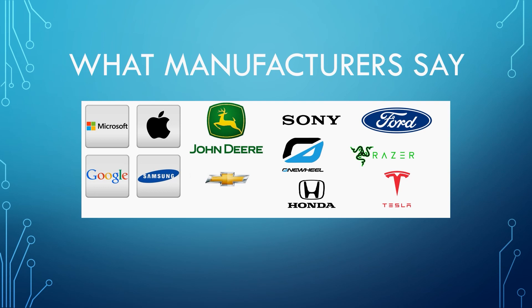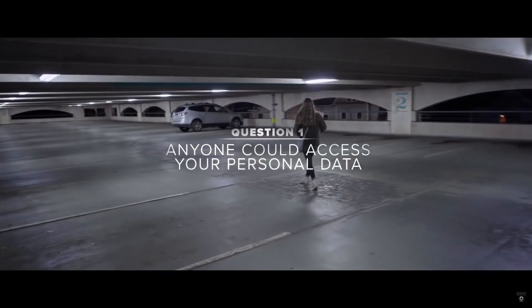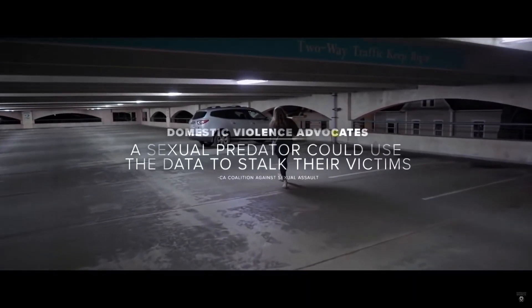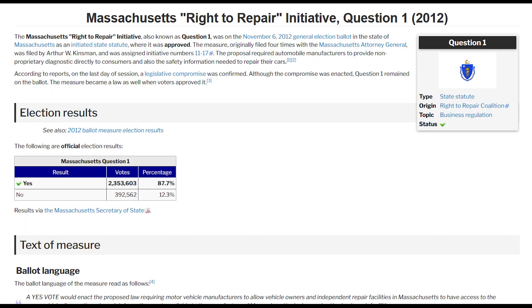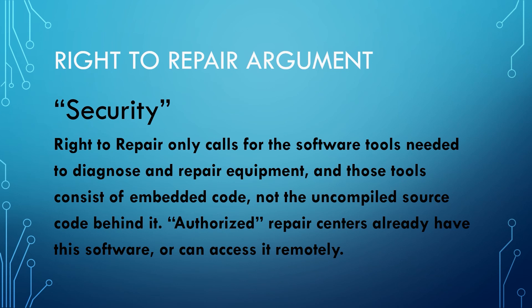So what's the manufacturer's excuse for not allowing right to repair? Their first and most common excuse is security. They claim legislation demands access to source code, which will make devices vulnerable to hackers. When Massachusetts was voting on a right to repair bill in 2020, they even insinuated that if manufacturers release diagnostic software and tools for their vehicles, it would somehow lead to sexual assault. Voters in Massachusetts overwhelmingly voted in favor of right to repair in both that case and a previous bill passed in 2012. Right to repair proponents countered this by reminding manufacturers that right to repair only calls for the software tools needed to diagnose and repair equipment — embedded code, not the uncompiled source code behind it.